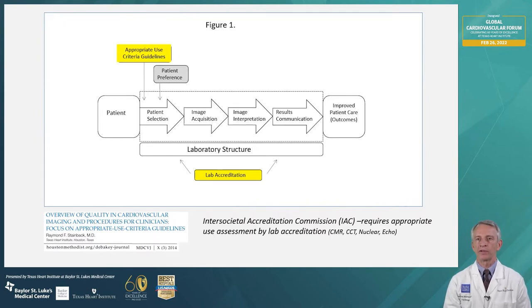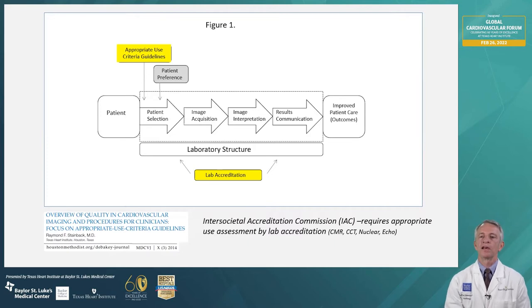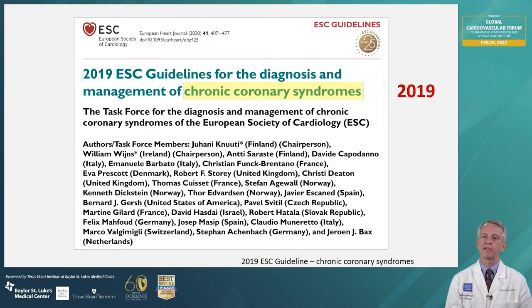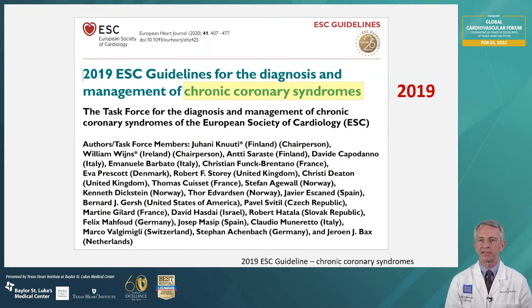The AUC documents remain relevant quality tools for helping to reduce unnecessary use, particularly in stable outpatients, where patterns of imaging overuse have been documented. The Intersocietal Accreditation Commission requires that labs performing noninvasive tests assess appropriate use as one component of required quality improvement programs. The 2019 European Society of Cardiovascular Imaging Guidelines for the Diagnosis and Management of Chronic Coronary Syndromes states that selection of initial noninvasive tests based on clinical likelihood of coronary disease and other patient characteristics that influence test performance, local expertise, and the availability of tests is indicated. This newer guideline emphasizes the crucial role of healthy lifestyle behaviors and other preventative actions in decreasing the risk of subsequent cardiovascular events and mortality, and discusses the utility of noninvasive testing for potentially influencing patient outcome.